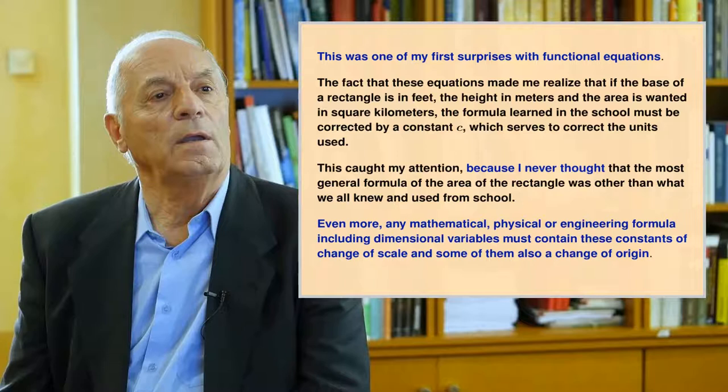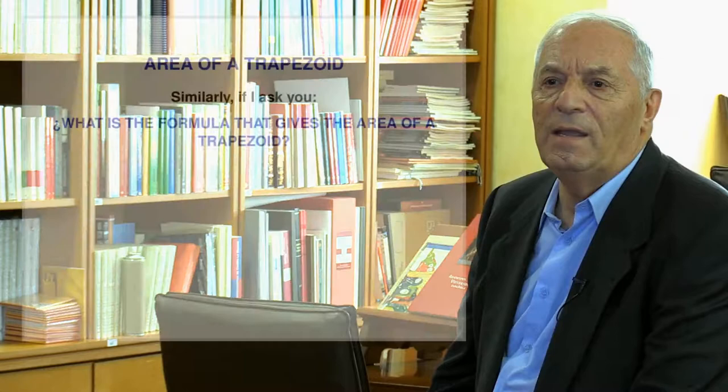Even more, any mathematical, physical, or engineering formula including dimensional variables must contain constants of change of scale and also a change of origin. Our second example is the area of a trapezoid. Similarly, if I ask you what is the formula that gives the area of a trapezoid, probably you will answer the product of the semi-sum of its bases times its height. However, this is not the correct answer.